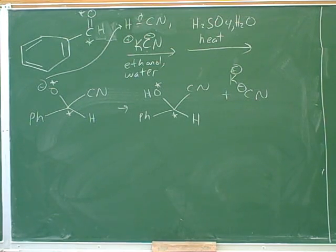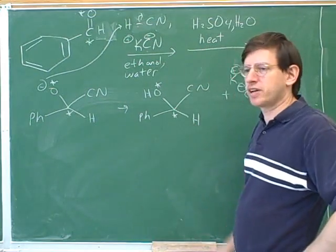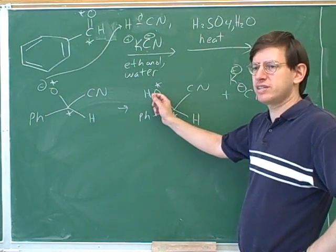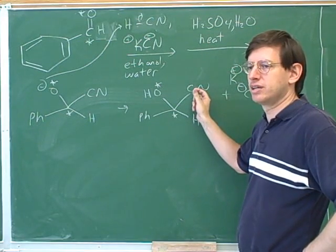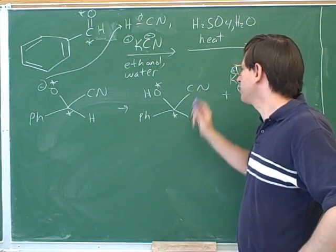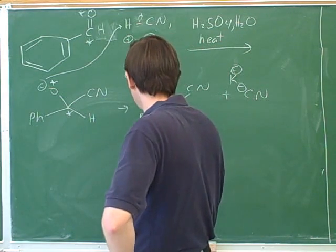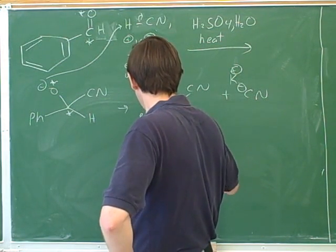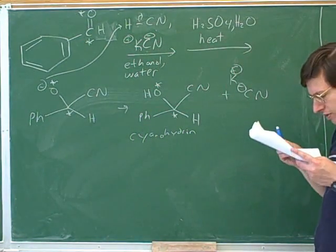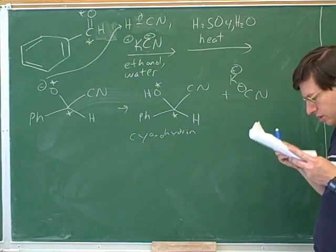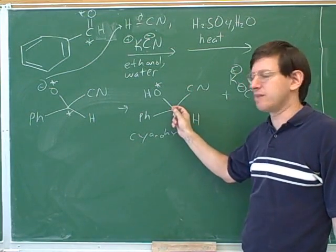The second thing you said was on the right track. Here we have two different functional groups. What type is this? Hydroxyl or alcohol. Right. And what type is this? Nitrile. Right. And it turns out that when you have a nitrile and an alcohol connected to the same carbon, that's called a cyanohydrin. That's a name you might be expected to know.